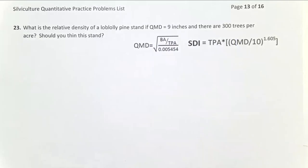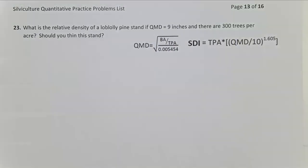So these problems are always going to follow a very similar process. We're going to need to calculate SDI, and then we're going to need to compare that to maximum SDI to calculate relative density. So let's start by calculating SDI.